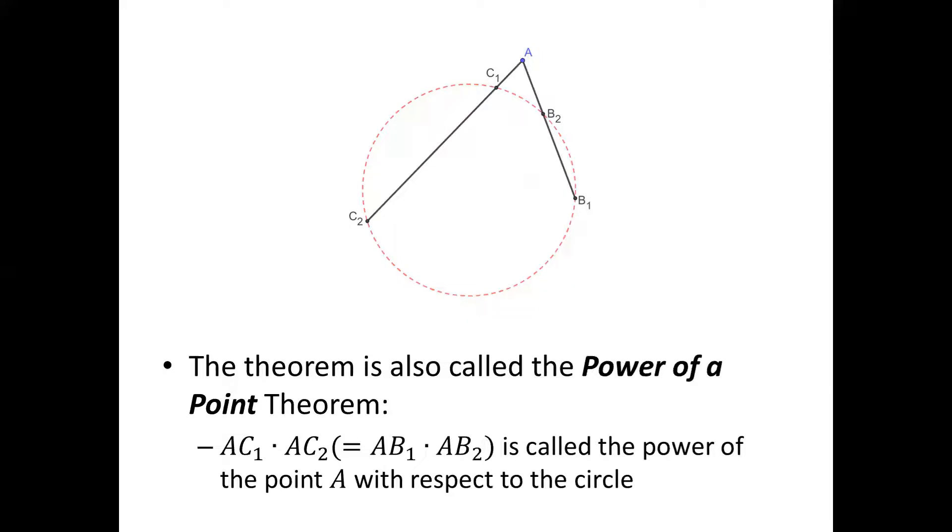A little bit of explanation of the theorem. The theorem is also called the power of a point theorem. Given a point A and a circle, we can draw a line passing through point A with two intersections with the circle. For example, intersections B1 and B2. We calculate the product AB1 · AB2.